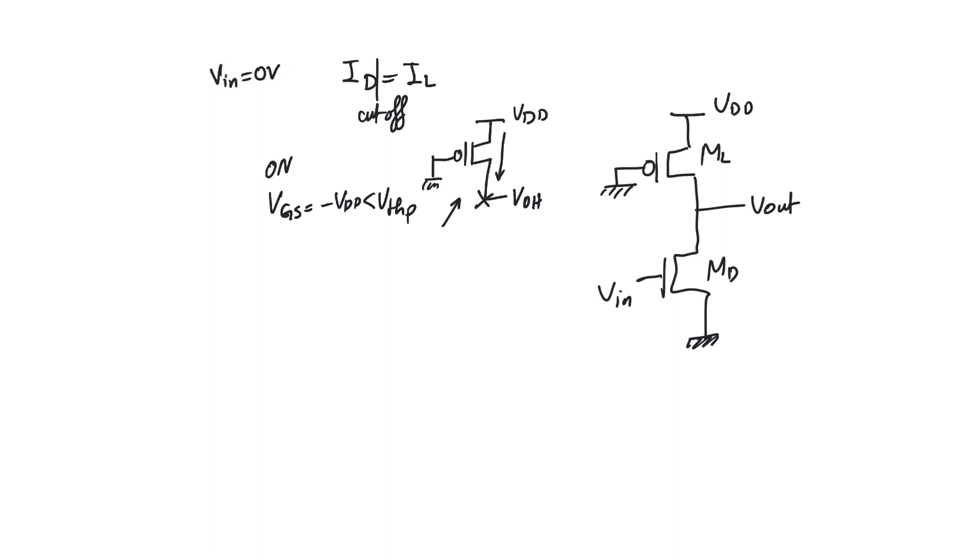The question is, is this PMOS transistor ohmic or saturated? And the answer is it has to be ohmic. Why? Because if it was saturated, then the current flowing through it with these terminal conditions can never be zero. And the PMOS saturation current is Kp over 2 into VGS, which is minus VDD, minus V threshold P, all square. This is not zero. It's impossible for this to be zero.